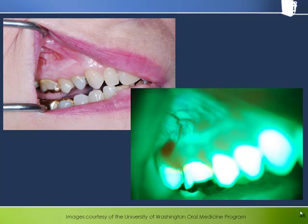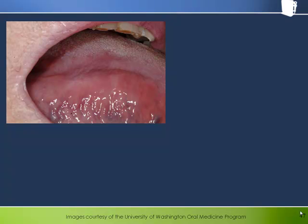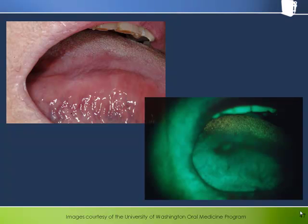Note that the leukoplakic area anterior to the lesion does not seem to show a loss of fluorescence. Here we have a somewhat subtle leukoplakia on the lateral border of the tongue that appears quite striking and dark under fluorescence. This lesion was biopsied and found to be dysplastic.